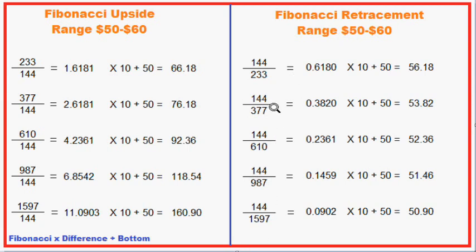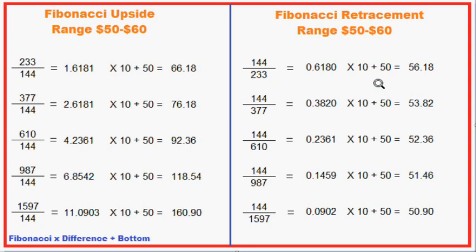On the retracement side, the way Fibonacci is used most of the time, you take the range of a particular area. If we were to be tracing back, you go from 50 to 60, markets start selling off, and the next target would be 56.18. If you break that, you go to 53.82. Once you go from 9% down to zero, you're talking about going from 50.90 down to 50. But this is the basics of Fibonacci.